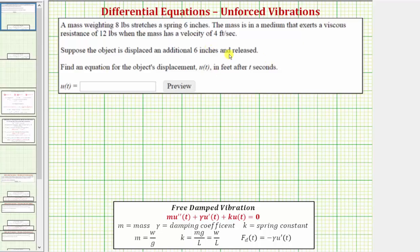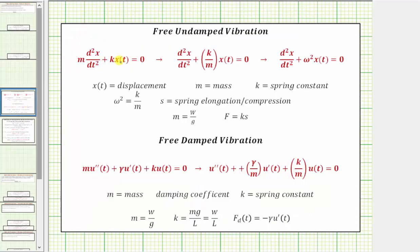To model the situation, we use a homogeneous second order differential equation, where u(t) is the displacement function, m is the mass, gamma is the damping coefficient, and k is the spring constant. The only difference between undamped and damped vibration is that for damped vibration we have an extra term, gamma times u'(t). This term does not appear in undamped vibration — notice there is no x'(t) term in the undamped case.